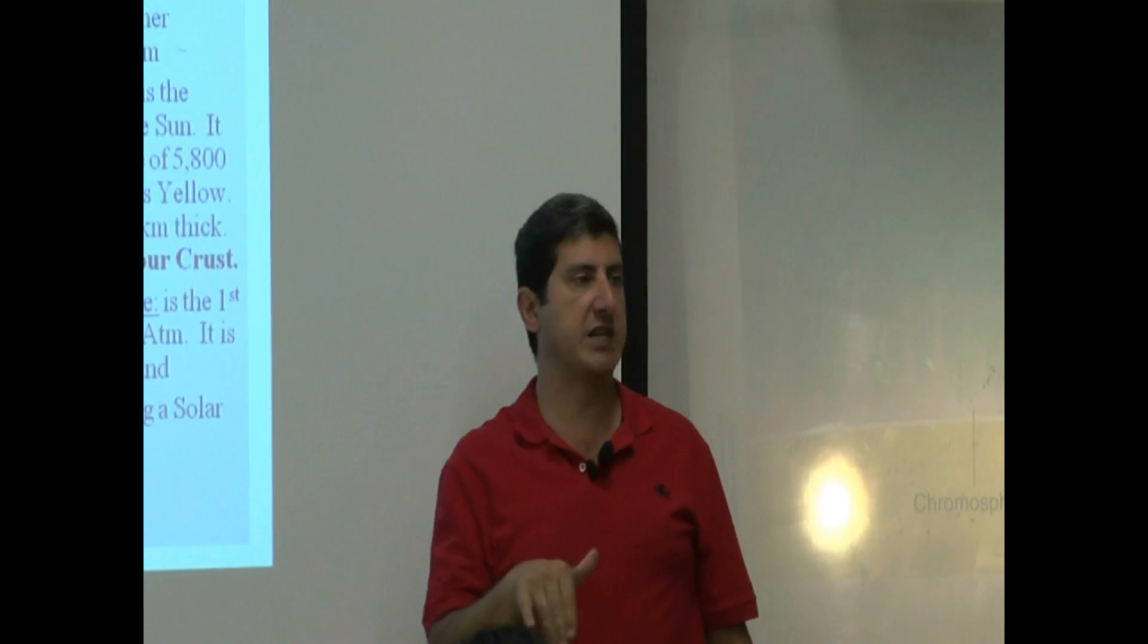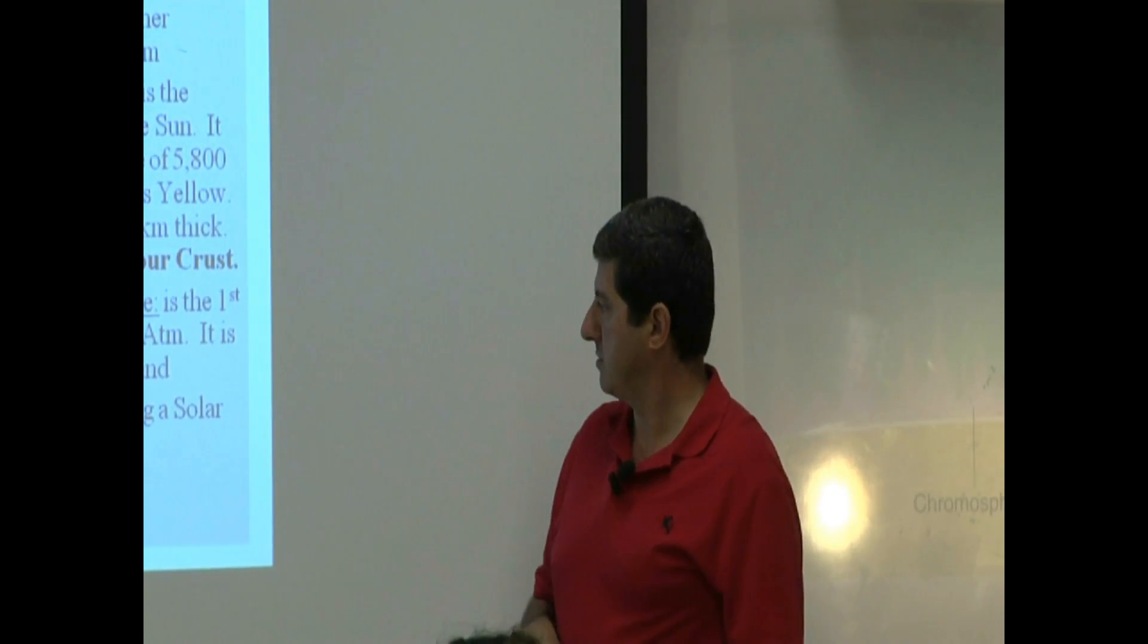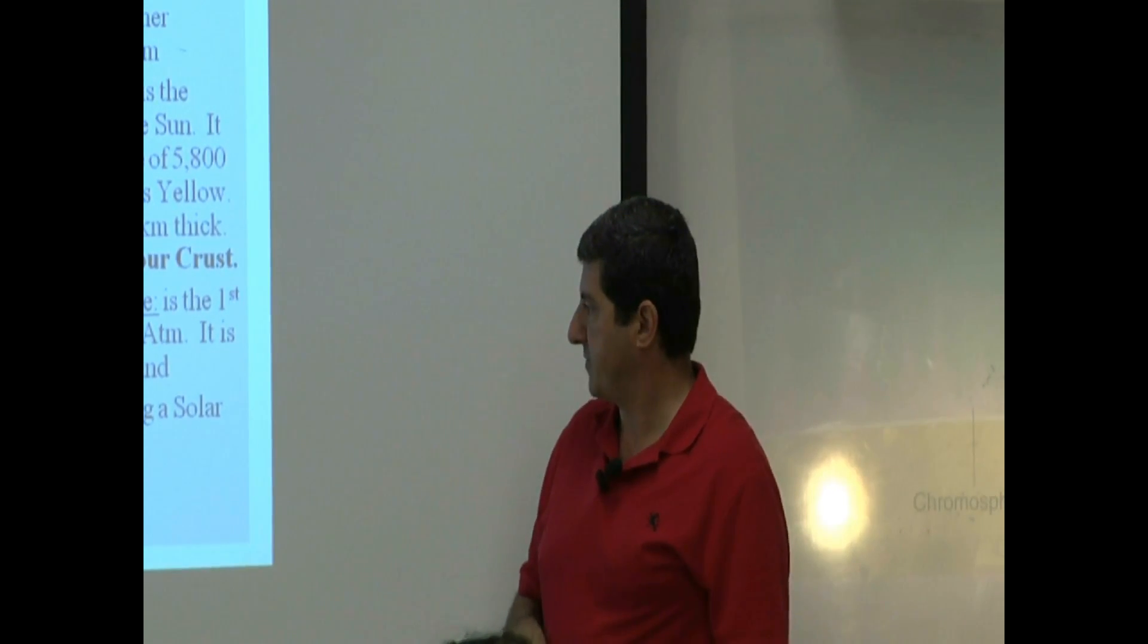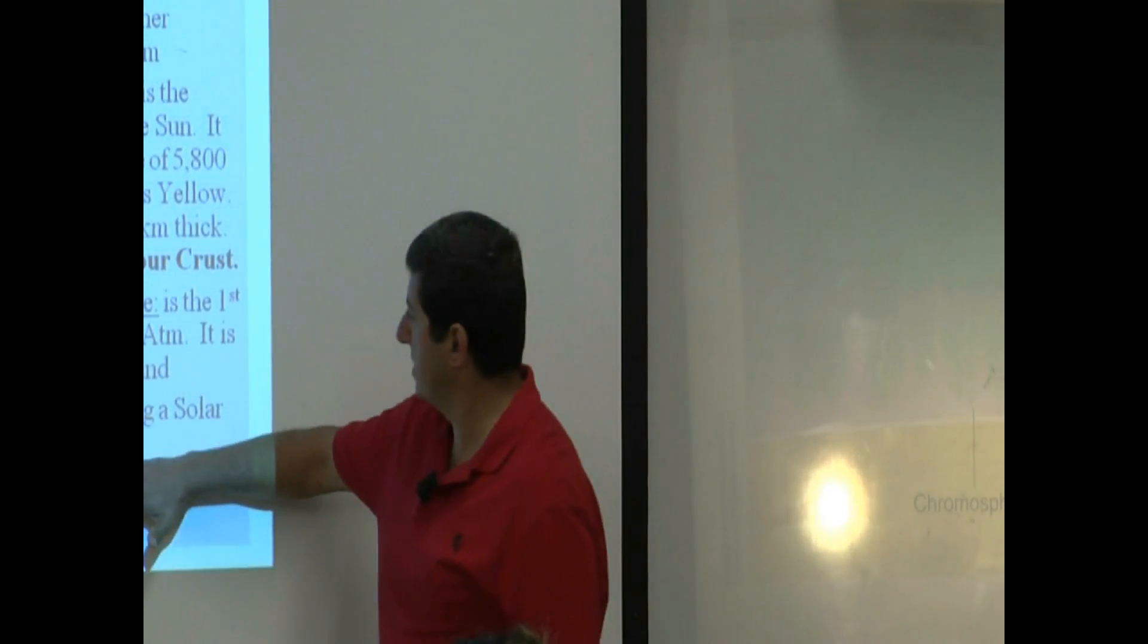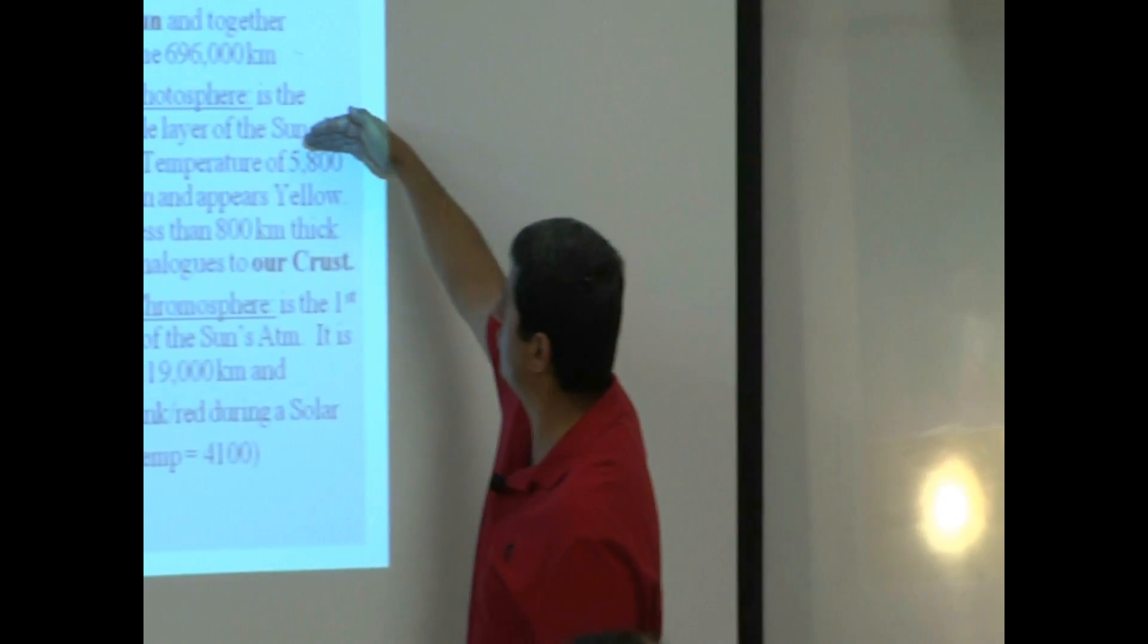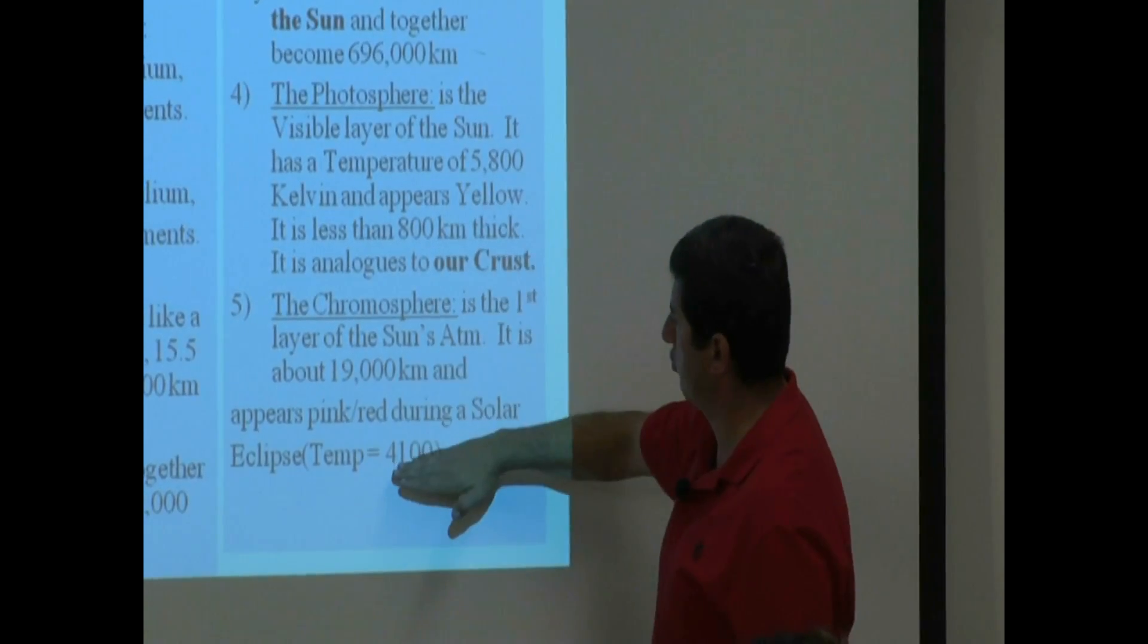And you can only see it during a solar eclipse. Its temperature is about 4,100 kelvin. Notice, this one is 5,800 kelvin. So this one is cooler.